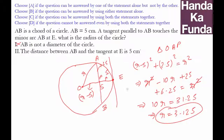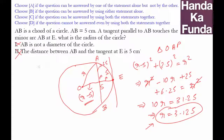But R = 3.125 is an invalid value — since OP was R minus 5, the radius must be greater than 5 units, so 3.125 is impossible. With the second statement alone we cannot determine anything, and even combining both statements yields the same invalid result. If the question cannot be answered using both statements, you mark D. Thank you.